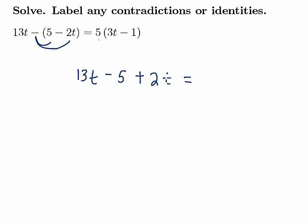And over on the right-hand side, we'll distribute the positive 5 through the parentheses, giving us 15t minus 5.